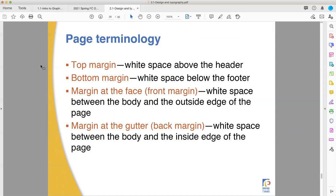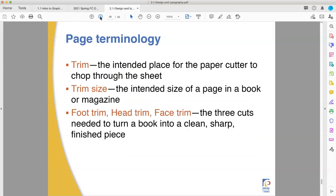So the top is at the top, the bottom is at the bottom, the face margin is along the face or thumb edge, and the gutter margin is how much space you allow for the fold to happen. The margin is consistent, it's just where it's located.